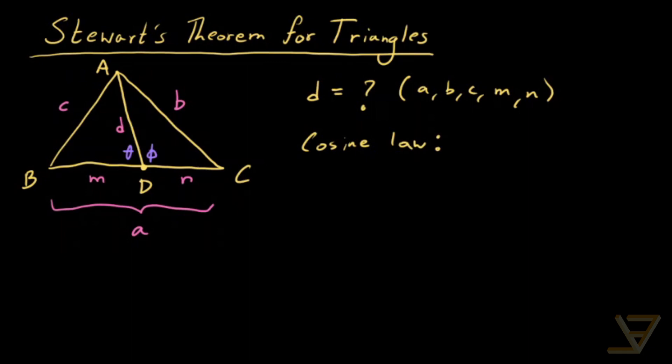First of all, using it on angle ADB, we get that d squared plus m squared minus 2dm times cos theta is equal to c squared. So that's the first application. And then applying it to angle ADC, we find that d squared plus n squared minus 2dn times cos phi is equal to b squared.